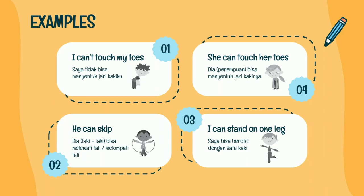Number three: I can't stand on one leg — saya tidak bisa berdiri dengan satu kaki. I di sini sebagai subject, can't sebagai verb, stand on one leg sebagai objek.